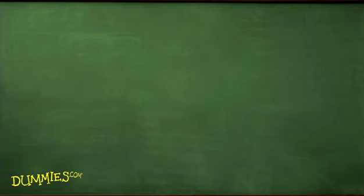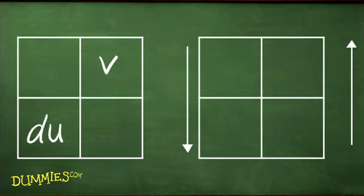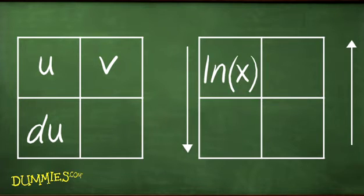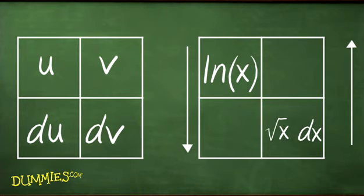To help keep everything straight, organize integration by parts problems with two boxes like this. Put the u in the upper left corner of one and the natural logarithm of x in the upper left corner of the other one. Now, put the dv and the square root of x times dx in the lower right-hand corners.